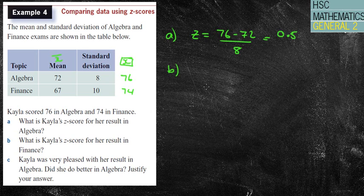Part B, what is Kayla's z-score for her result in finance? Well, finance is 74 take away 67 divided by 10. So that's 7 over 10, 0.7.